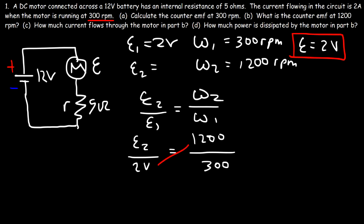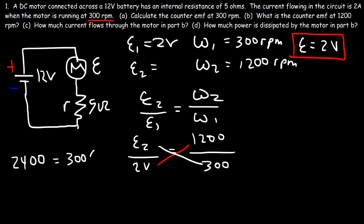Cross-multiplying: 2 times 1200 is 2400, and that equals 300 times the second EMF. Dividing 2400 by 300 gives an EMF value of 8 volts. So the counter EMF is 8 volts when the motor is spinning at 1200 RPMs.